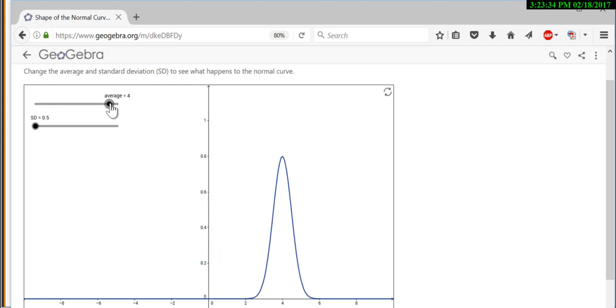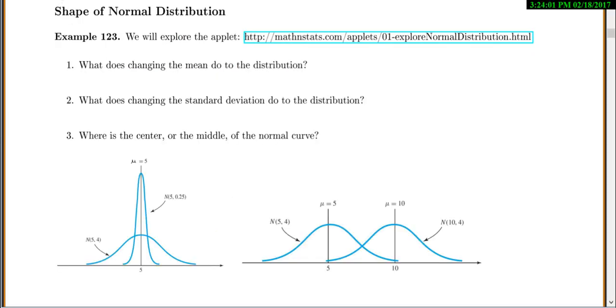Now let's see what happens if we change the standard deviation. Here's my standard deviation at 0.5. Notice as my standard deviation gets bigger, my curve gets fatter and fatter and spread out. If my standard deviation gets smaller, my curve gets skinnier and skinnier. So bigger standard deviation just means it's more spread out.